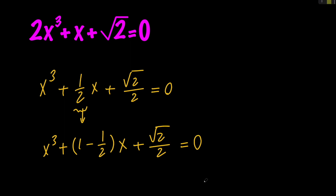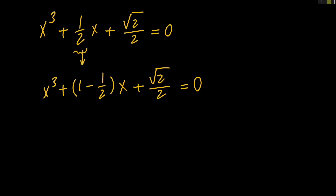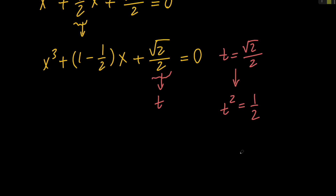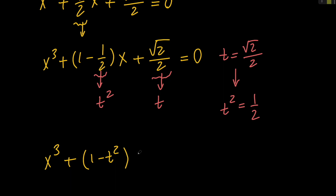Next, let's go ahead and use the substitution method. So we're going to substitute this number with t. So t equals √2/2, which means that t squared is going to be 2/4 or 1/2. So if √2/2 is t, then 1/2 is going to be t squared, which means that our equation is x cubed plus the quantity (1 minus t squared) times x plus t equals 0.